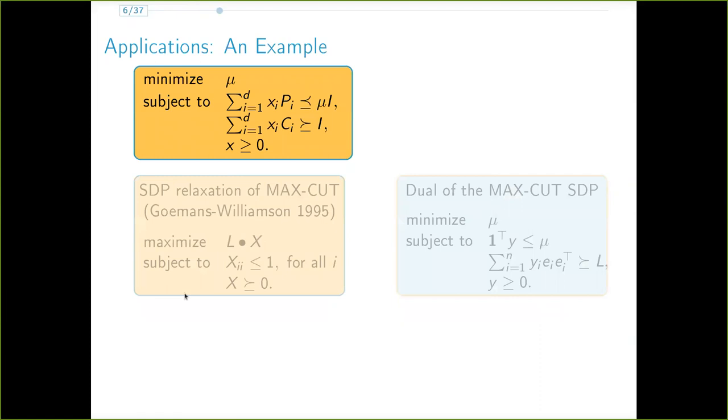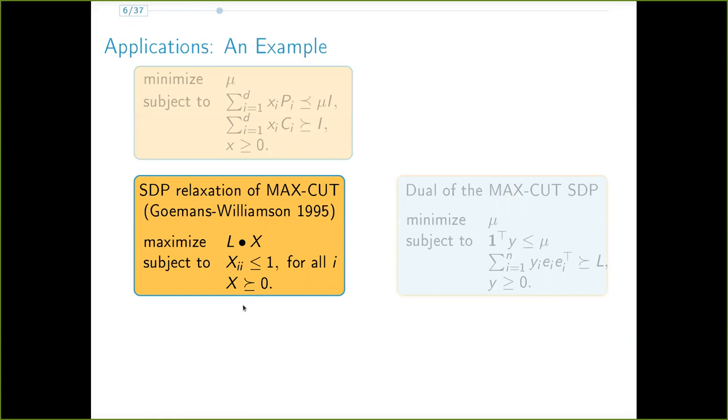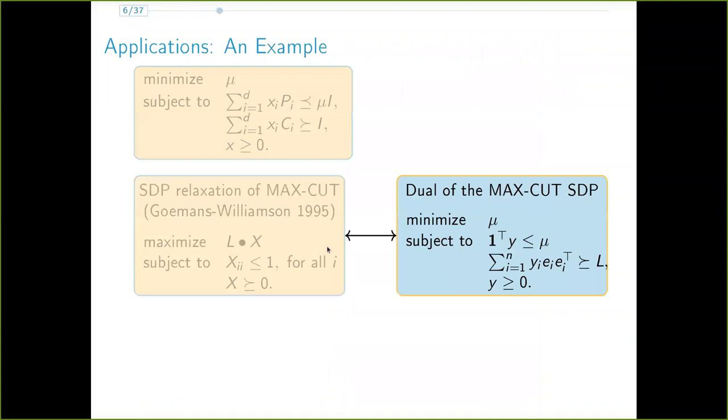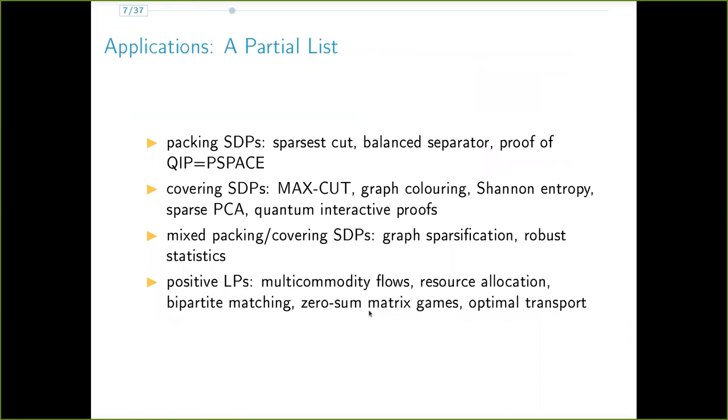To illustrate one such example, consider the SDP relaxation of max cut as provided by Goemans and Williamson in 1995. The dual of this problem is exactly a covering SDP. Positive SDPs are ubiquitous in the SDP relaxations of graph problems such as coloring, sparsest cut, balance separator, etc.